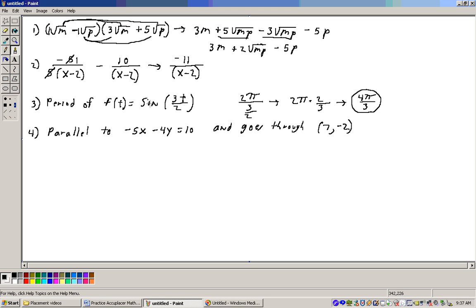The period of f of t equals sine of 3t over 2. Well, first of all, you need to know that in trig, the fundamental period of sine, cosine, secant, and cosecant is 2 pi. The fundamental period of tangent and cotangent is just pi. Then to get the period, you take that value for this one. It's sine. It's 2 pi. You take that. You divide it by the coefficient right here, which is 3 halves. So 2 pi divided by 3 halves is the same as 2 pi times the reciprocal, 2 thirds. And 2 times 2 is 4, so it would be 4 pi over 3. And that would be the right answer to that one.